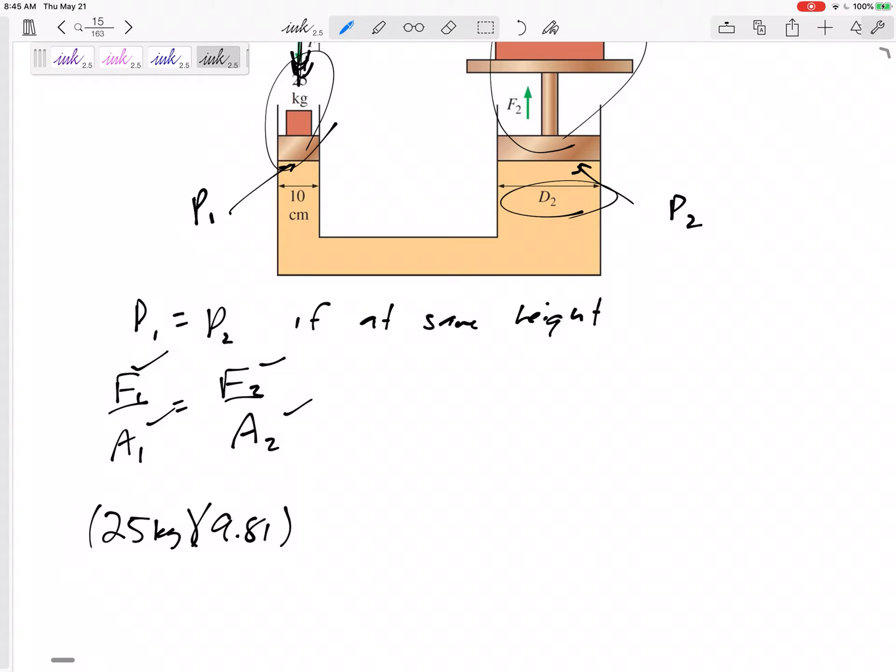That's the weight. The force pushing down is really the weight, and the weight is 25 times 9.81 meters per second squared.